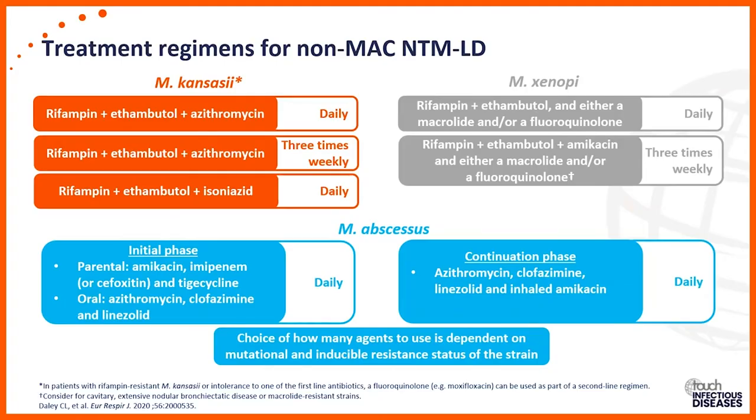For Mycobacterium abscessus, which is often the most complex, we think about an initial phase and a continuation phase. There are three subspecies — M. abscessus abscessus, M. abscessus bollettii, and M. abscessus massiliense — and they each have different variations of acquired or mutational macrolide resistance. It's extremely important to find out if your patient has a macrolide-resistant species.